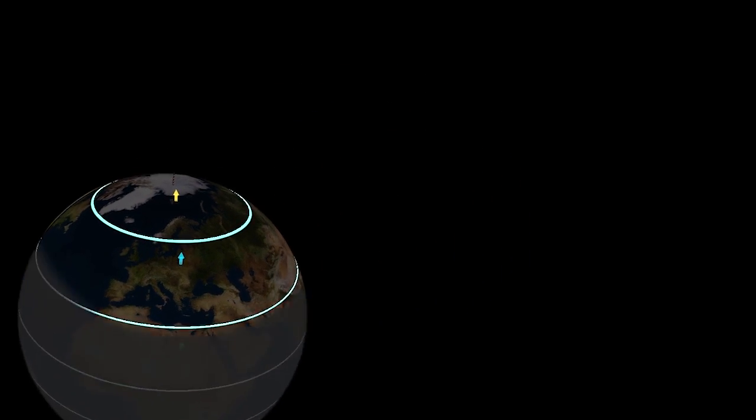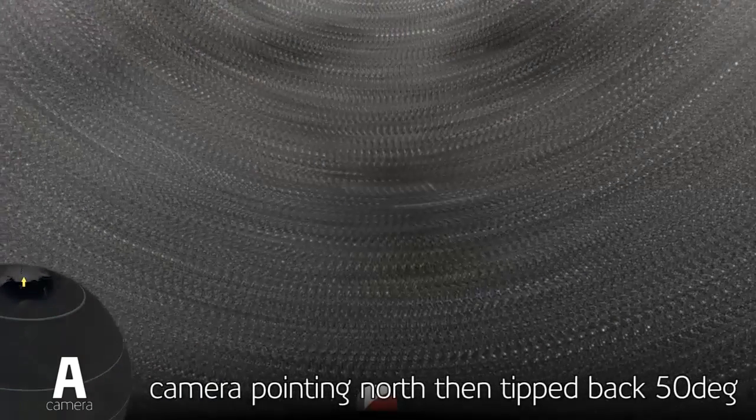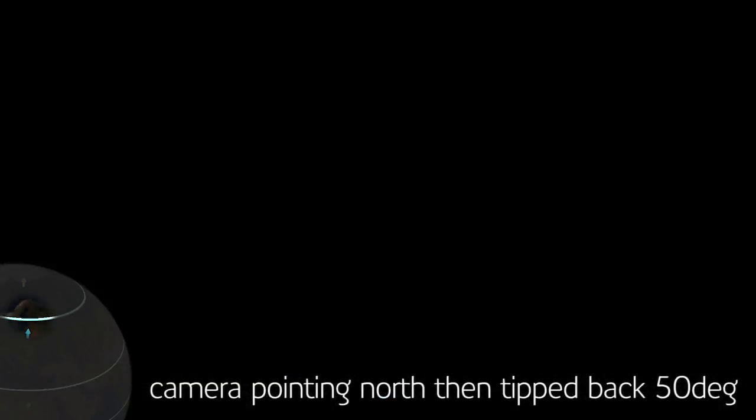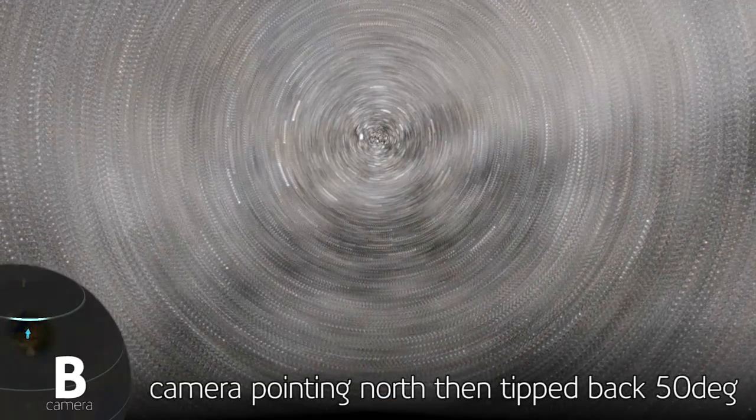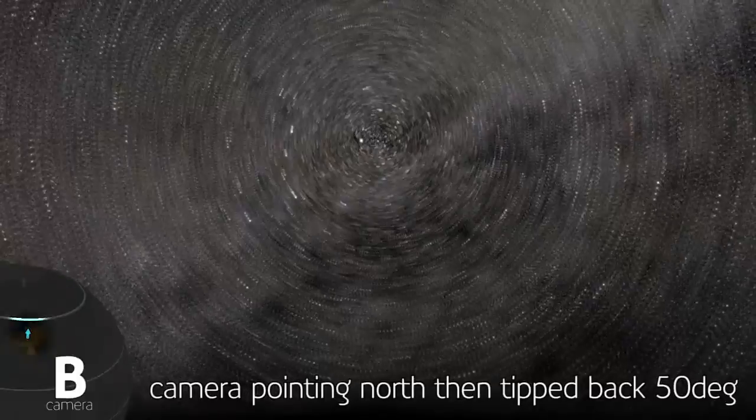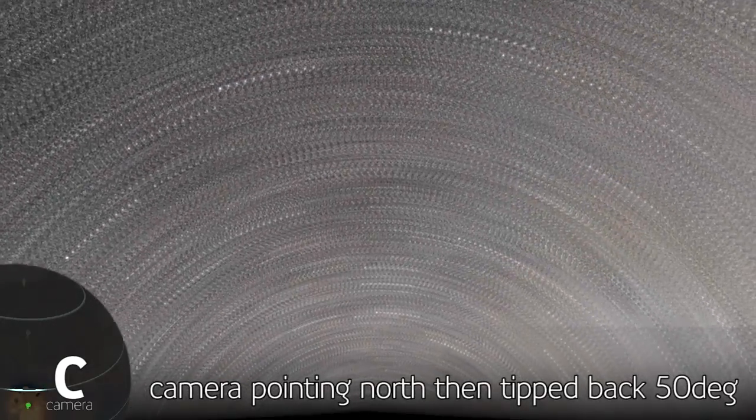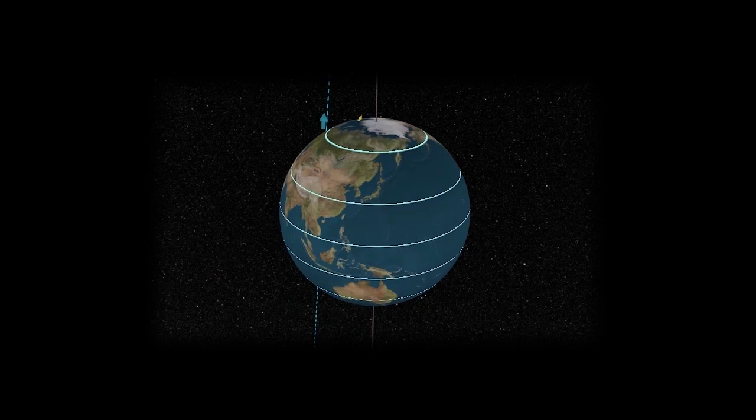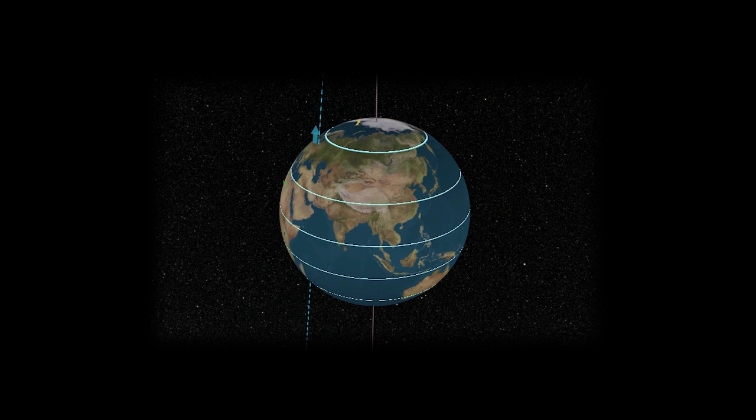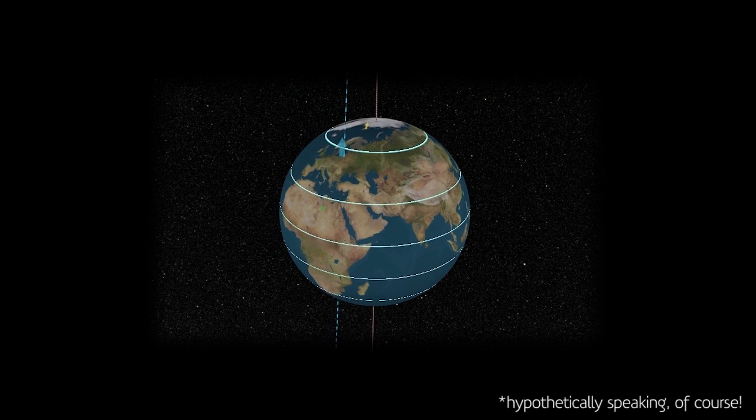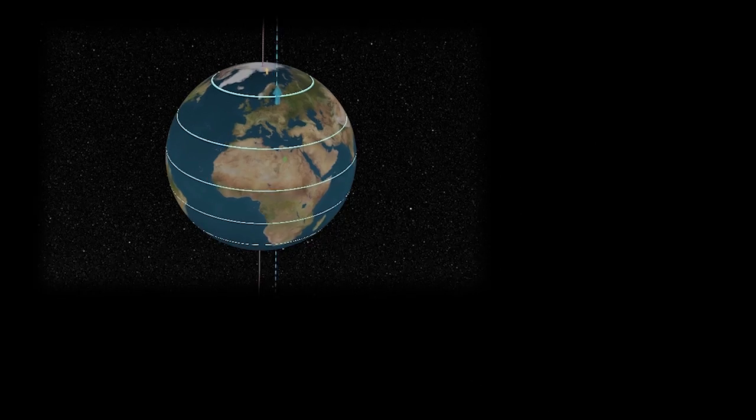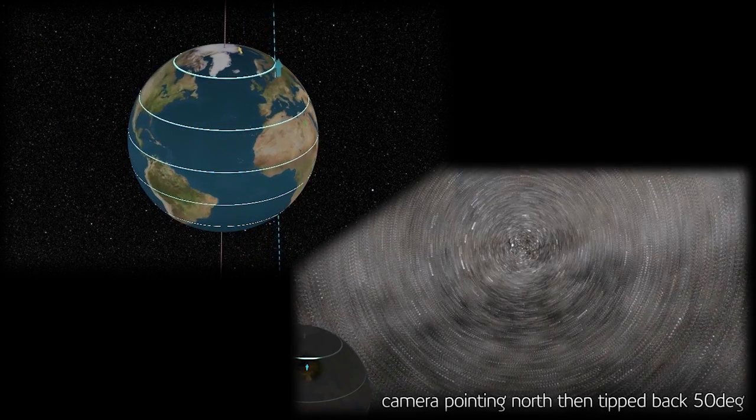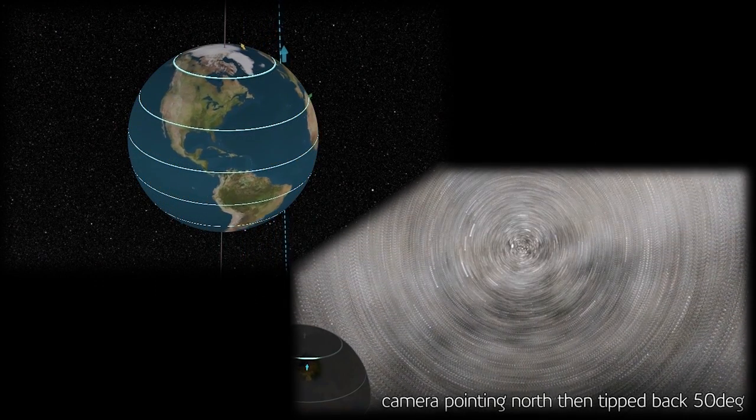Okay, so what we're seeing is that the closer the angle of the camera is to the earth's axis of rotation, the closer the center of the star trail gets to the center of the frame. Simple, but not so easy to get your head around.